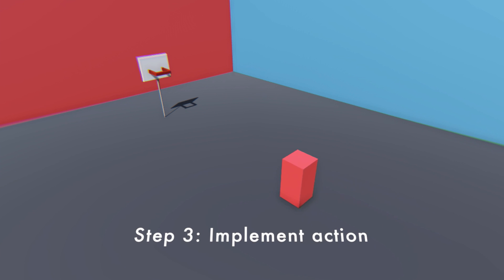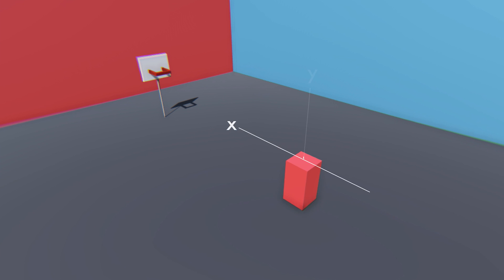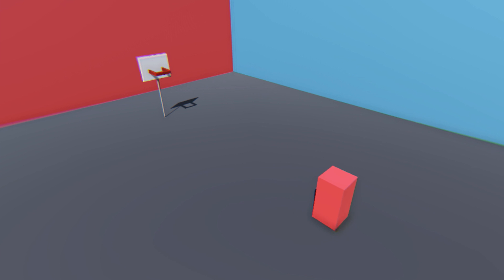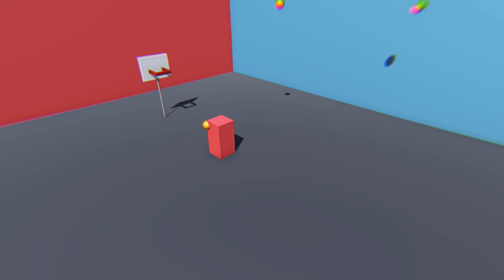A throw in our case consists of three parts: a Y direction, an X direction, and a force. What the AI has to do in order to succeed is to balance all three of those parameters perfectly to hit the court. If you think about it, that's actually not that easy — so it's plenty of work for our AI.